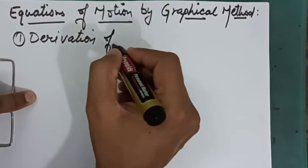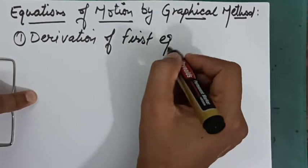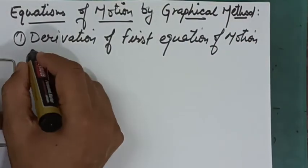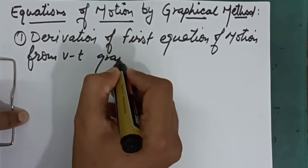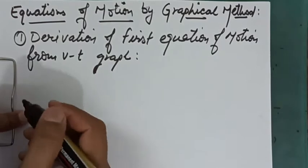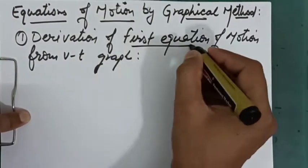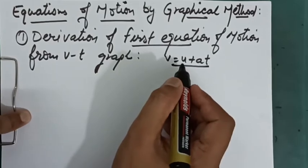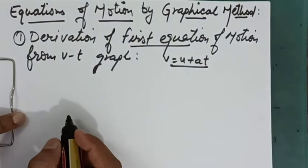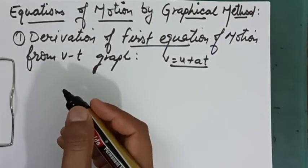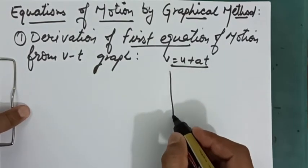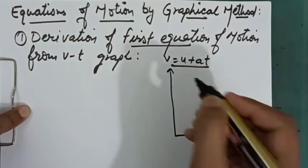Derivation of the first equation of motion from the v-t graph. The first equation of motion is v = u + at, that is final velocity equals initial velocity plus acceleration into time. For this derivation we will consider the velocity-time graph for a uniformly accelerated motion of a body having initial velocity u.